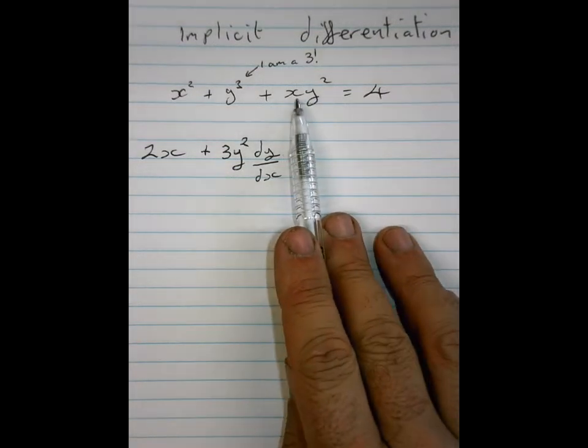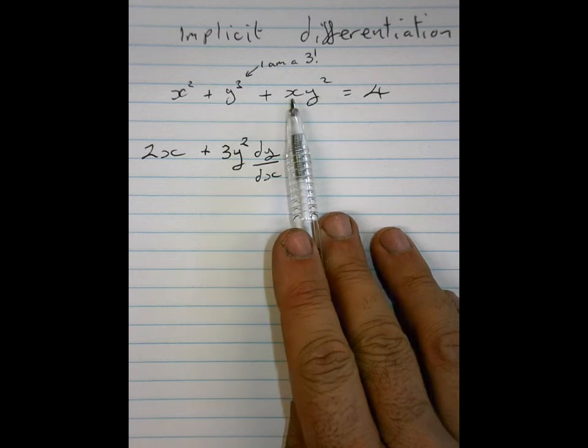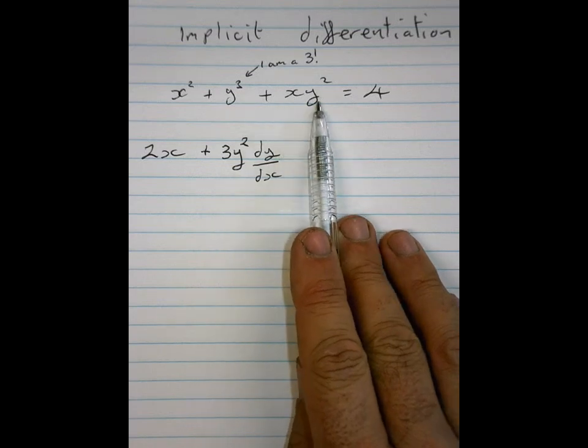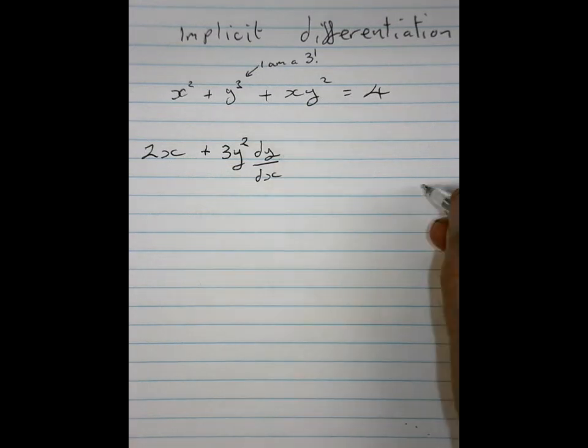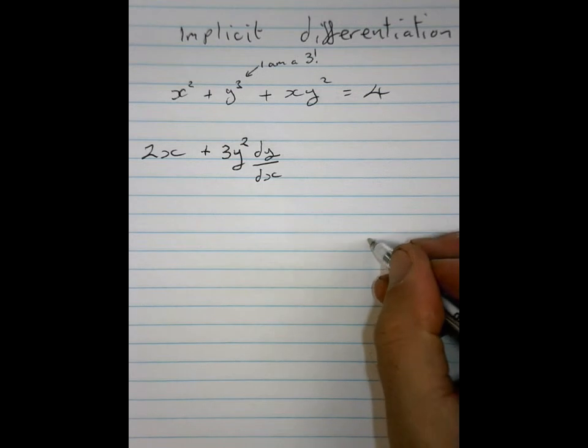Here is a product rule. There are two different functions, an x and a y squared. So over here now, I'm just going to come over to this side. Let's put it down here.